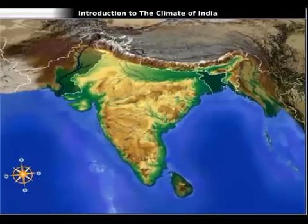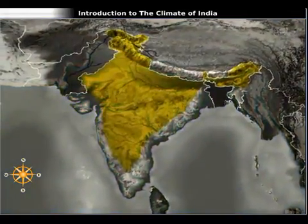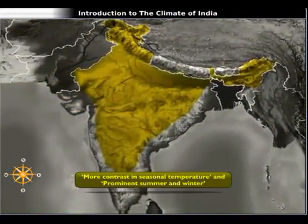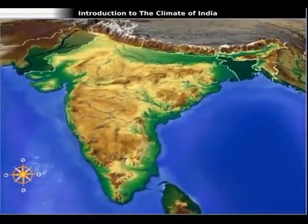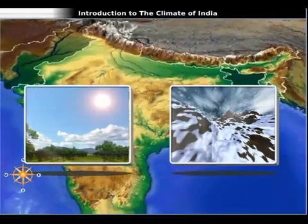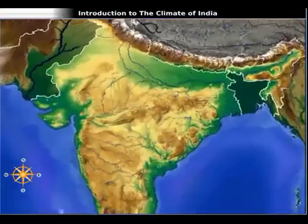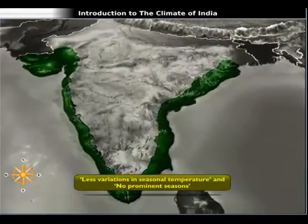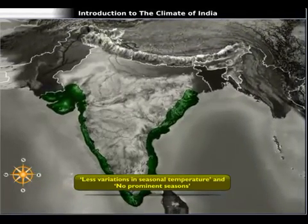If you notice carefully, you will find that it is the interior parts far off from the coast that experience more contrasts in seasonal temperature — in other words, winter and summer will be prominent. But the reverse is true in the case of coastal regions. These regions experience only minor variations in seasonal temperature, or the change in seasons is not much prominent.